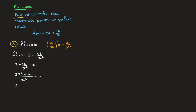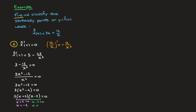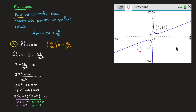So solving this equation is the same as solving 3x squared minus 12 equals 0. We're faced with a quadratic, which we can solve by factoring: 3 times (x squared minus 4) equals 0. Looking at x squared minus 4 as x squared minus 2 squared, I use the difference of two squares formula to get 3 times (x plus 2) times (x minus 2) equals 0. So either x plus 2 equals 0, giving x equals negative 2, or x minus 2 equals 0, giving x equals 2. These are the x-coordinates of the stationary points.